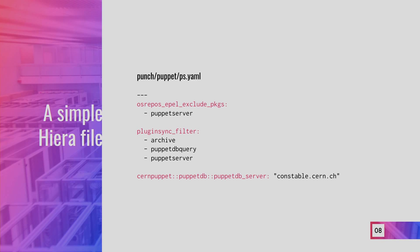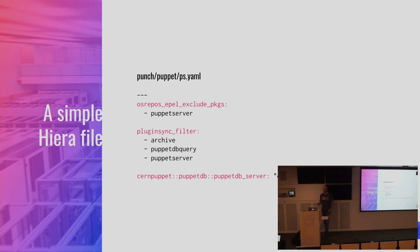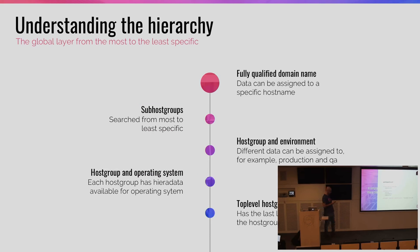A basic example of a Hiera file: we are defining YAML data for the top-level host group 'punch' and the sub-host group 'puppet::ps'. We are defining three different keys — the first two are arrays, which is the format for defining arrays, and the third is a string. This is the basic structure of a Hiera file.